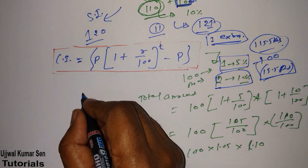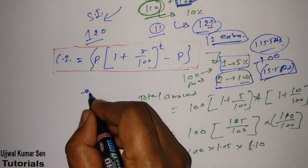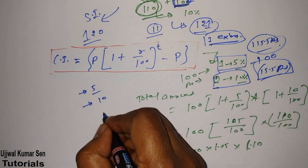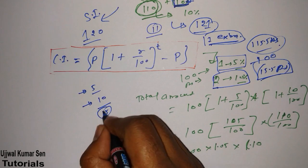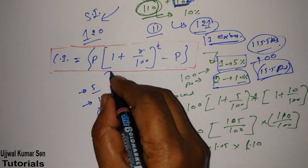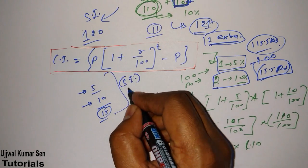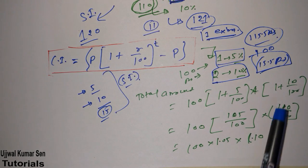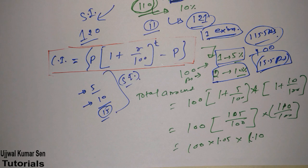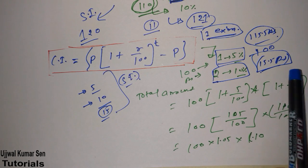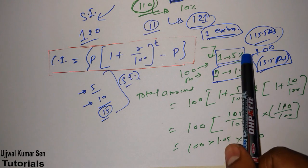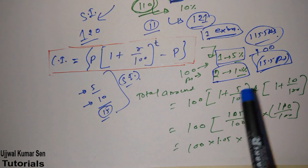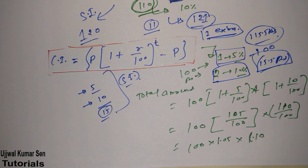If you had used simple interest instead — 5 rupees for the first year and 10 rupees for the second year — the total interest would be only 15 rupees. Because we are using compound interest, we get an extra 0.5 rupees. This extra amount comes from earning interest on the 5 rupees interest from the first year — that is what compound interest means.